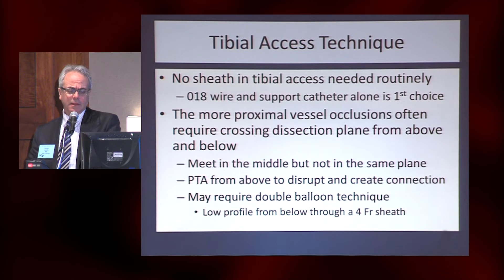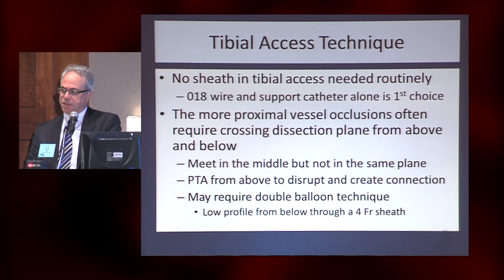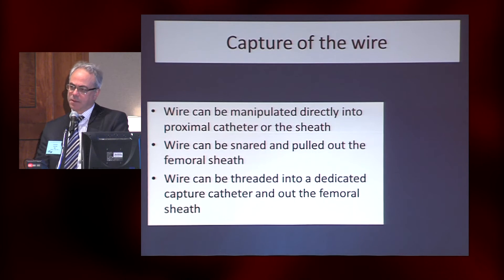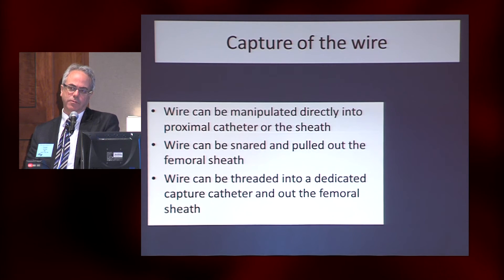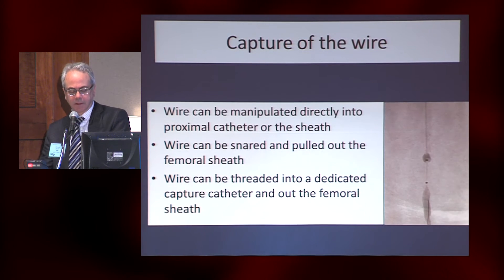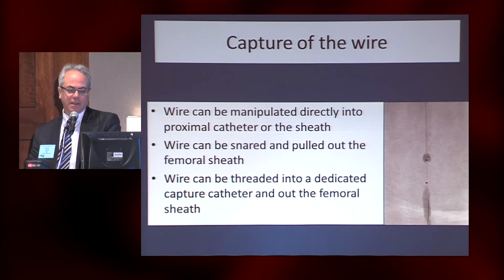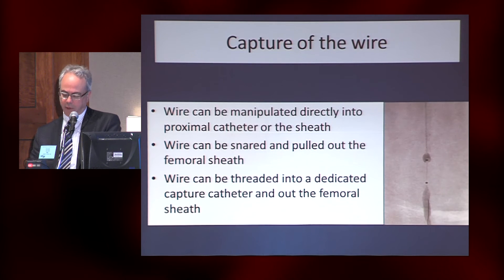The double balloon technique — where you put a balloon in from below — can be the final solution: you have a four-French sheath in, put a small balloon from below and a larger from above. Meeting in the middle is frustrating when you're in a different plane. For wire capture, usually you just get a wire through and manipulate it into your proximal catheter. You can use a snare or a device with a cone shape at the end, with contrast injected and a small balloon that centers it above and arrests flow, then slide your wire from above right into your catheter and out the sheath.